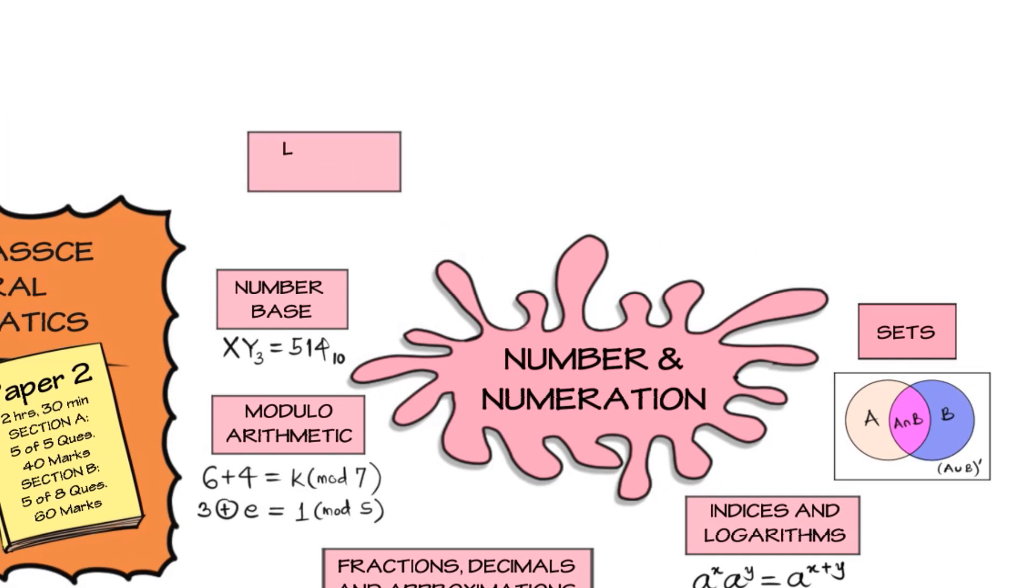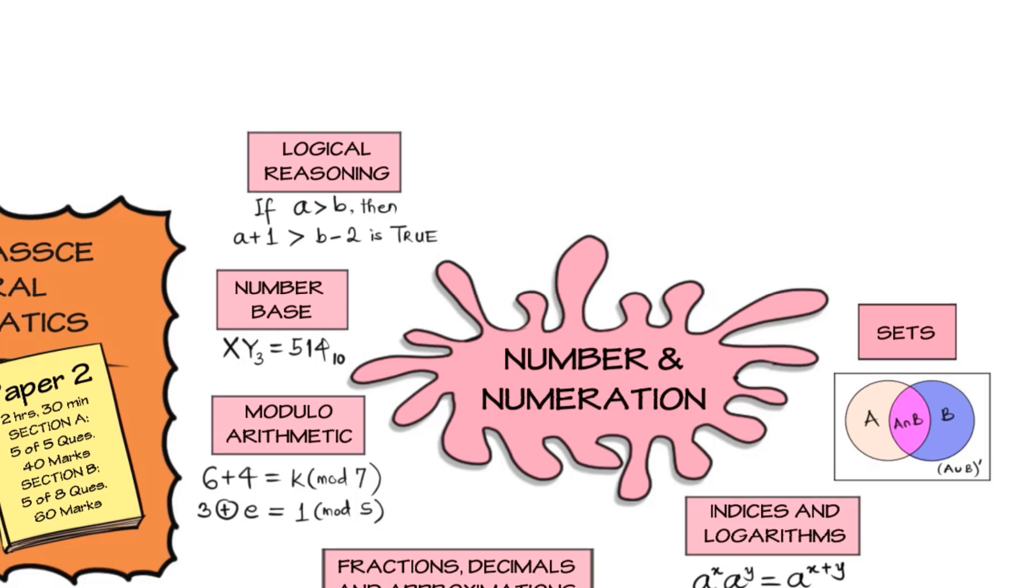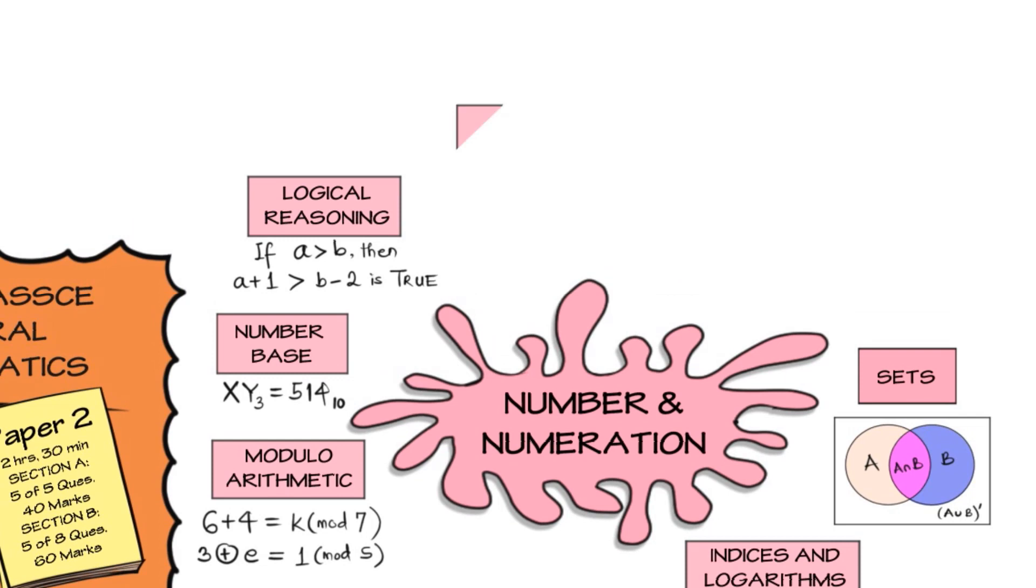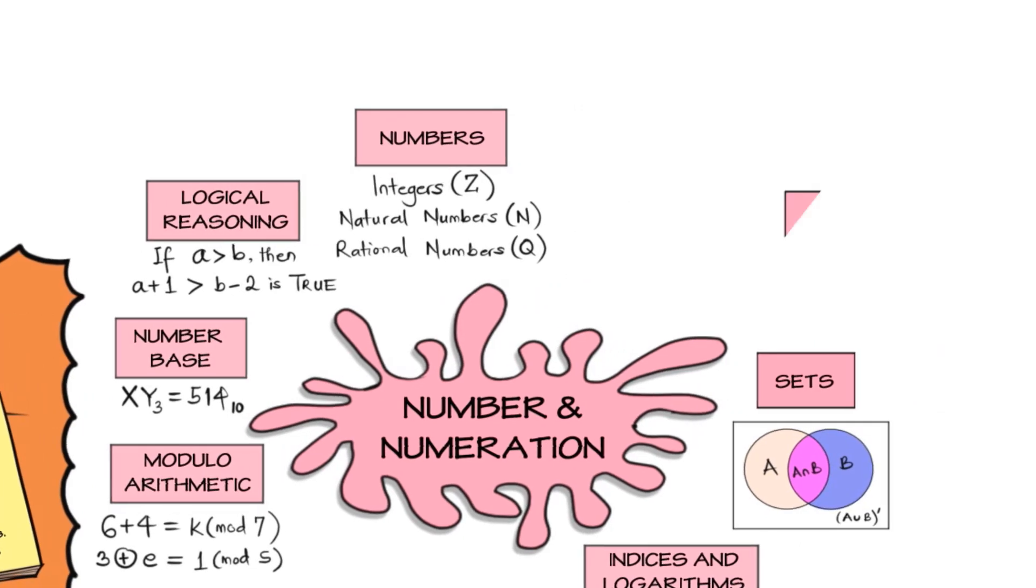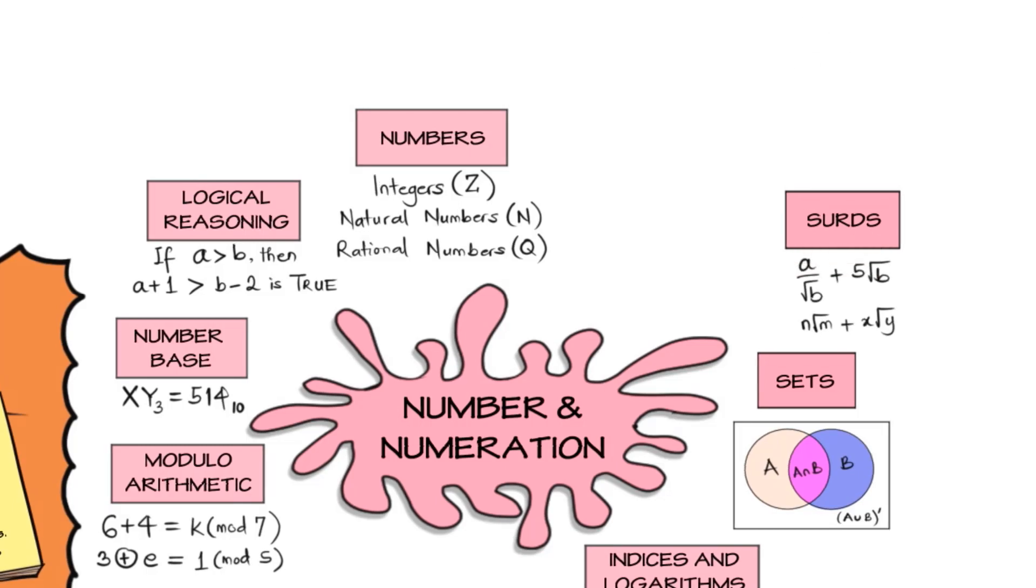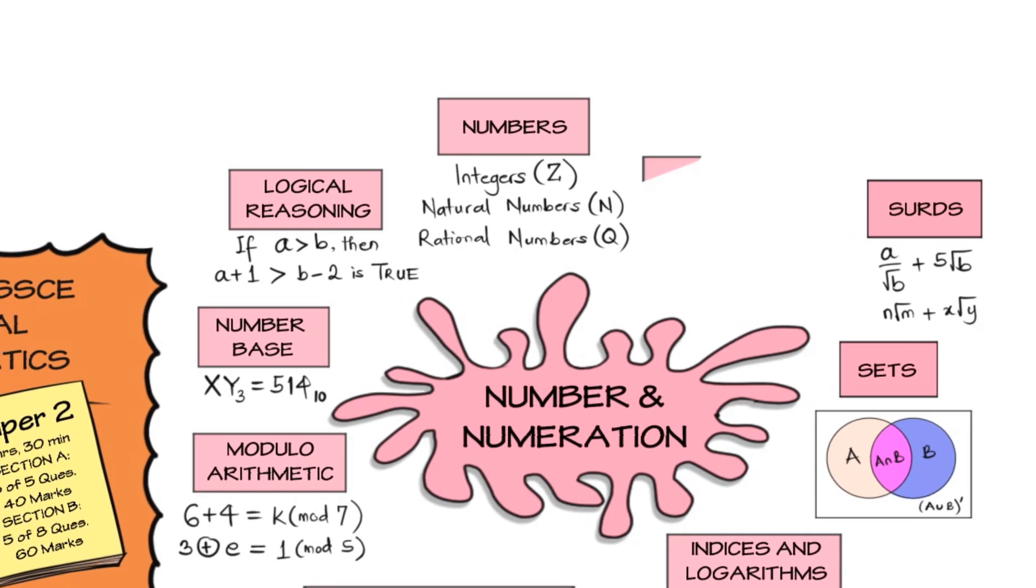Logical reasoning is something that is now being featured in the exam also, in which we want to look at the validity of true and false statements. Numbers, we'll be talking about natural numbers, integers, irrational numbers. And you need to understand what each of these means so that you can appropriately work with them. Surds is another aspect that WAEC is focusing on. And we need to know the format of how do we operate with surds? How do we find conjugate of a surd? How do we add? How do we multiply surds?